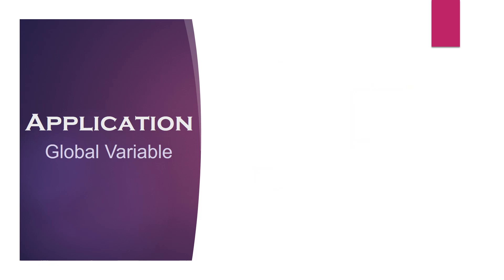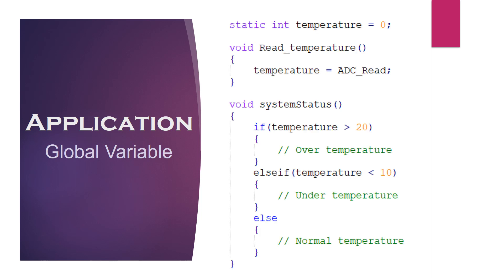Defining a variable within the global scope of a module implicitly declares the variable as external. But to avoid unauthorized access from other modules, it should be explicitly declared with the static keyword. As shown in this example, the temperature variable is going to be used by various functions of the temperature module, so in this case it makes sense to hide it from other modules by making it static.